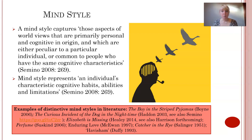So what is MindStyle? MindStyle is a term that we use in stylistics that looks at how different minds are represented in both fiction and non-fiction. I'm going to focus primarily on fiction today, but one of the examples in the tasks is looking at how MindStyle is used in animal documentaries to represent the minds and behaviours of animals as though they are thinking, intelligent beings that make decisions much in the way that humans do. Cimino offers a very good definition: a MindStyle captures those aspects of worldviews that are primarily personal and cognitive in origin, and which are either peculiar to a particular individual or common to people who have the same cognitive characteristics.